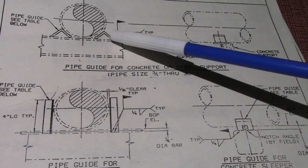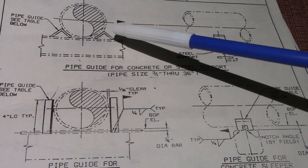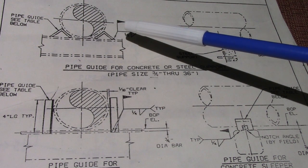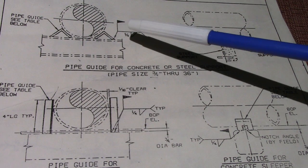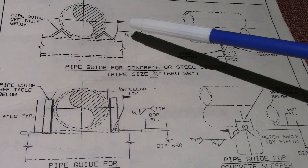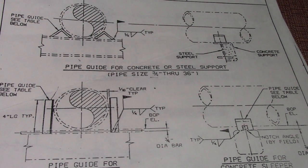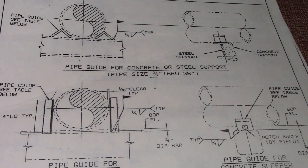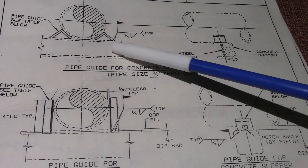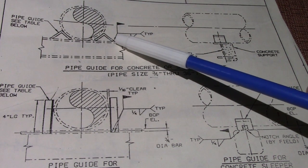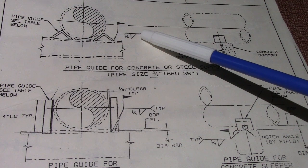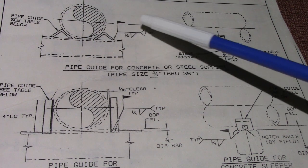They have different types of guides based on the size of the pipe and based on what the pipe is in service — like for example gas, vapor, liquid, or gas. So they have different types of guides. On this guide they also have welding symbols.